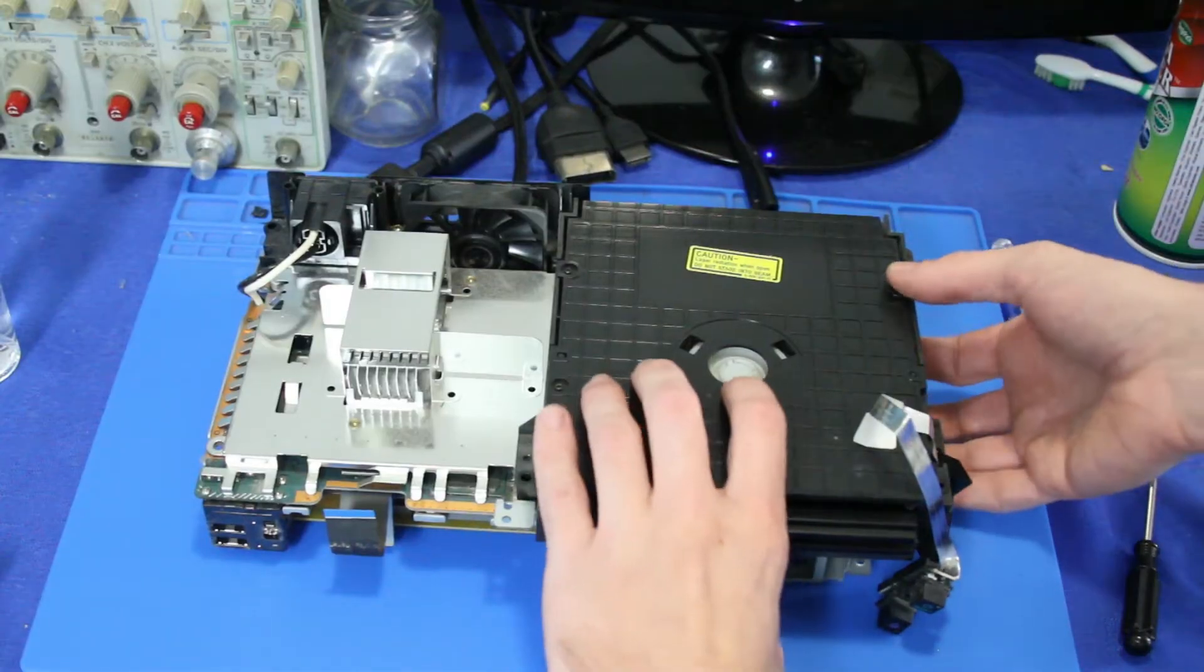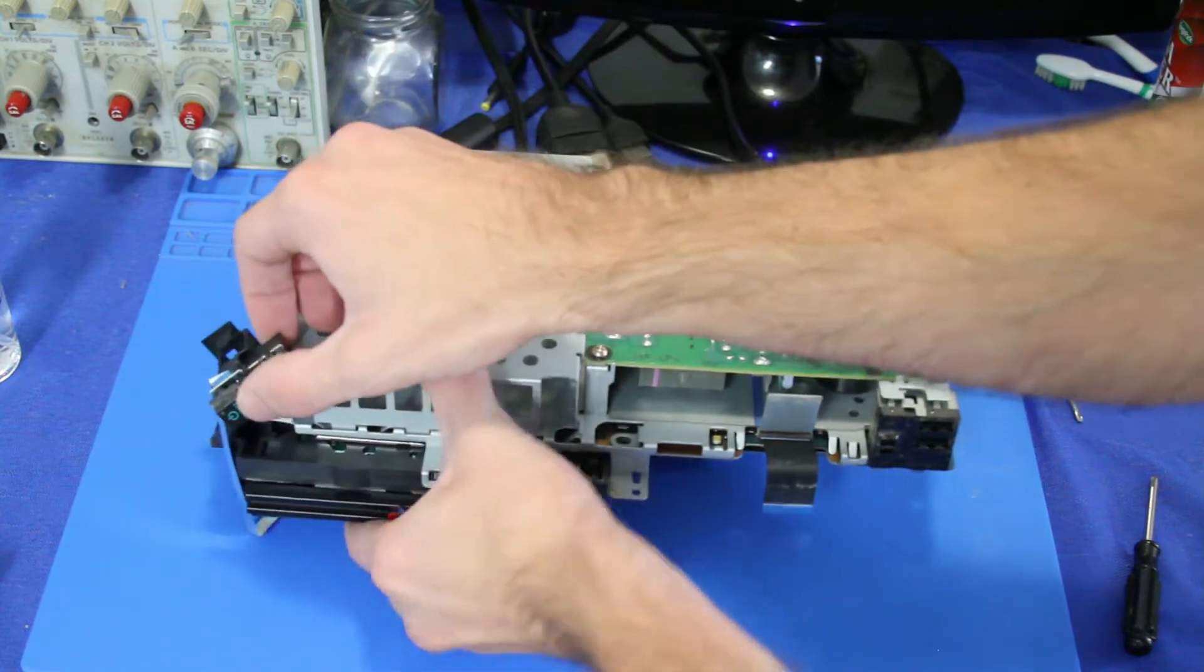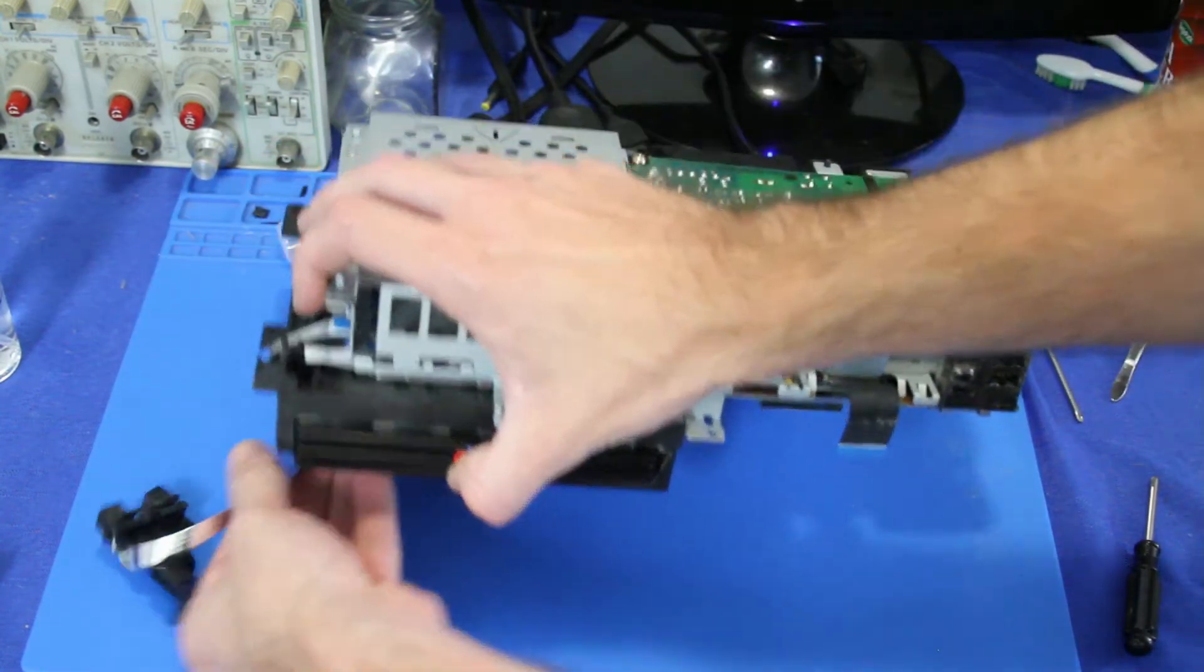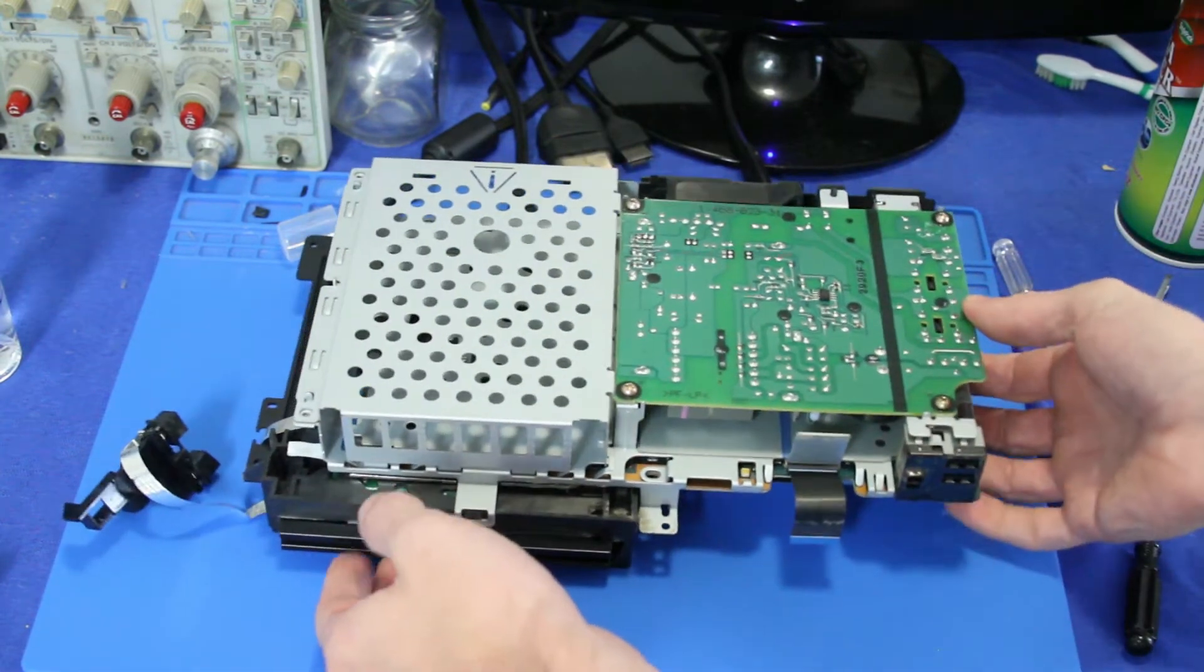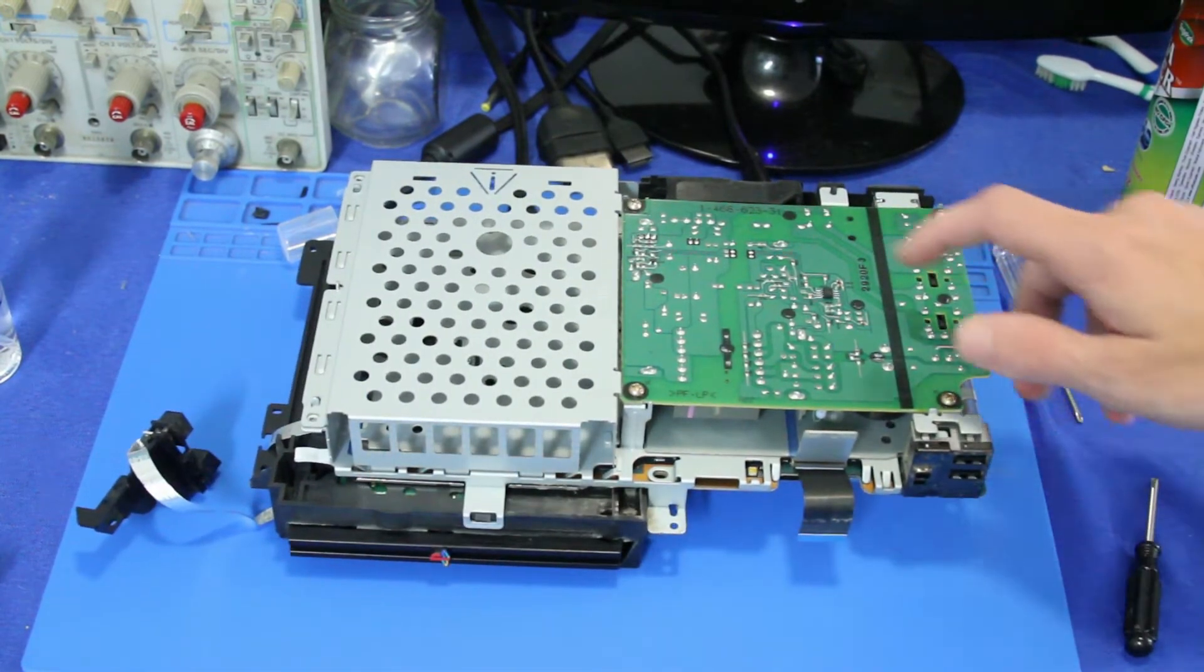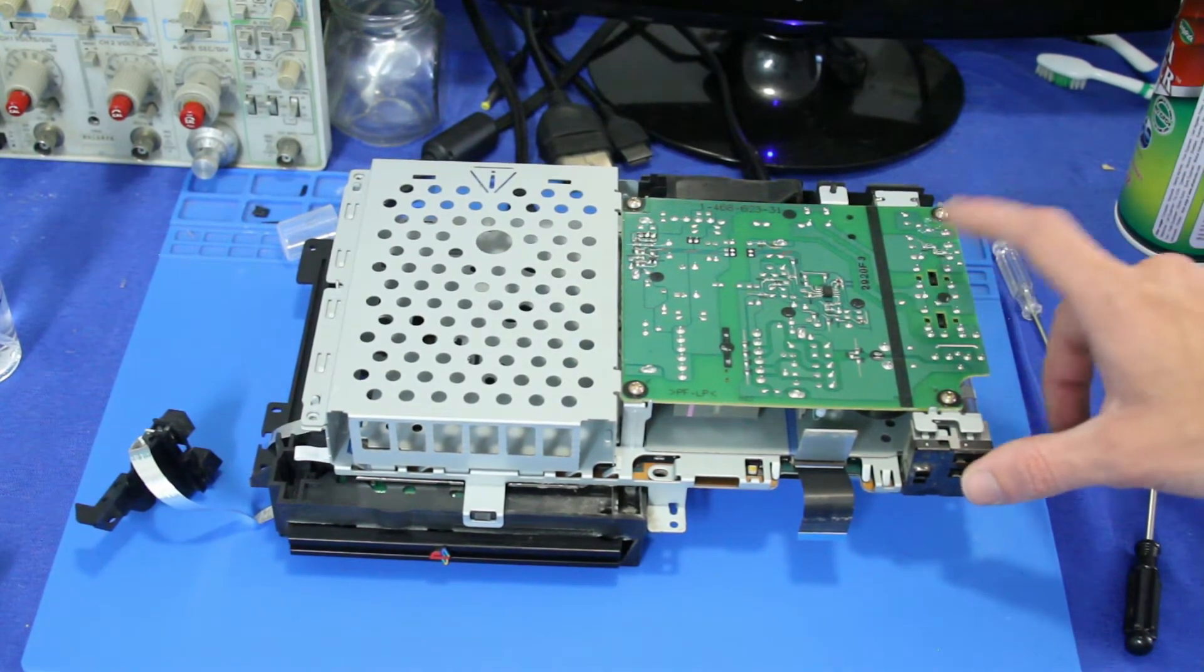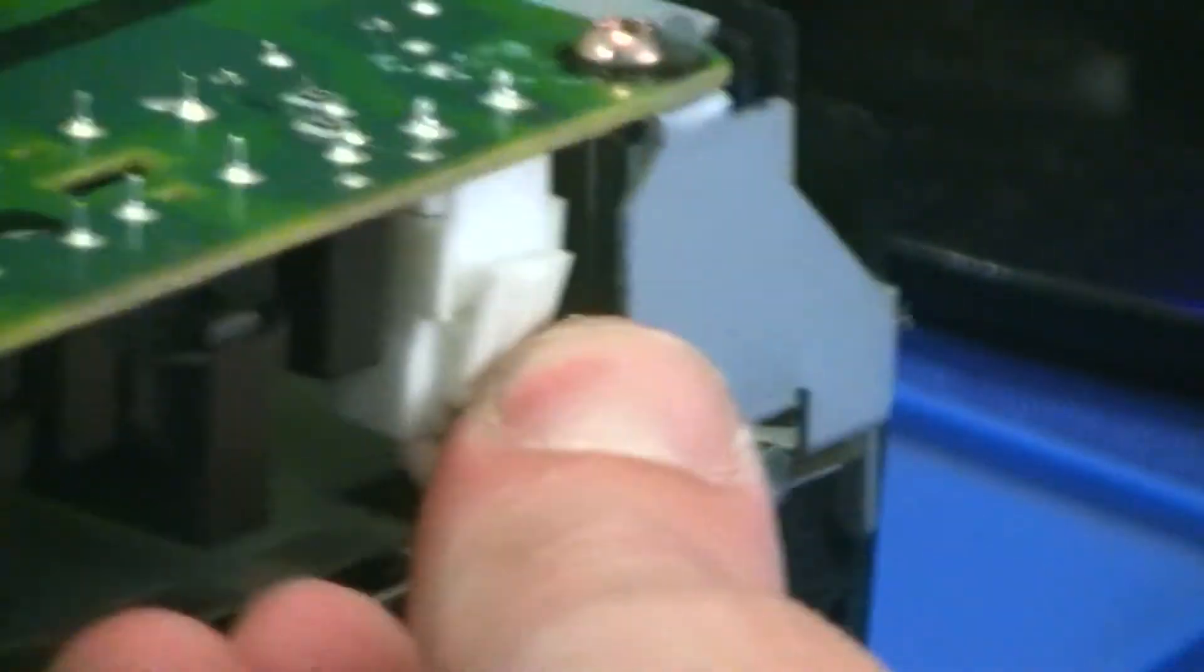So now we're just going to carefully flip this over. By carefully, I mean like be careful of this ribbon cable. You don't want to damage that, because then you'll have to get a new one and it's a pain in the butt. Well, here's the power supply. So now what we have to do is we have to unplug it and unscrew it from the chassis.